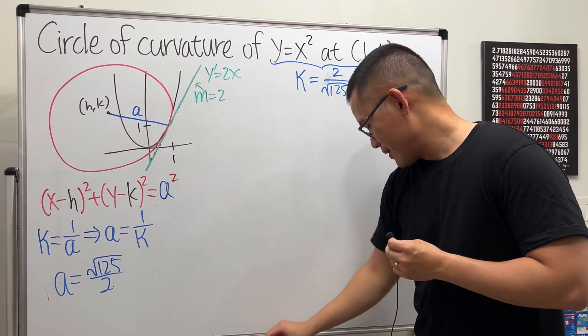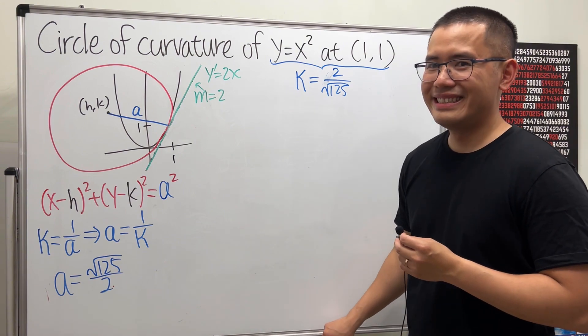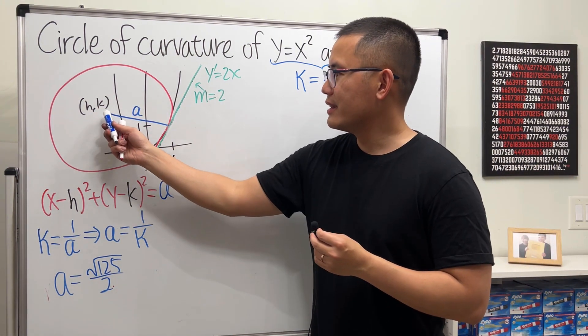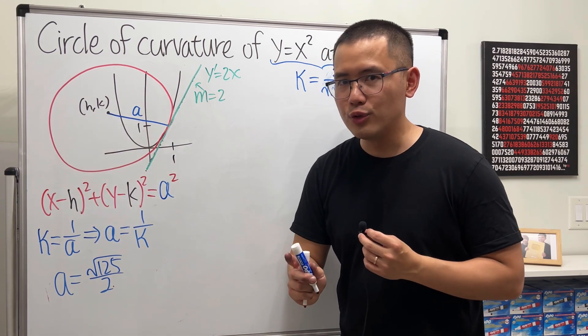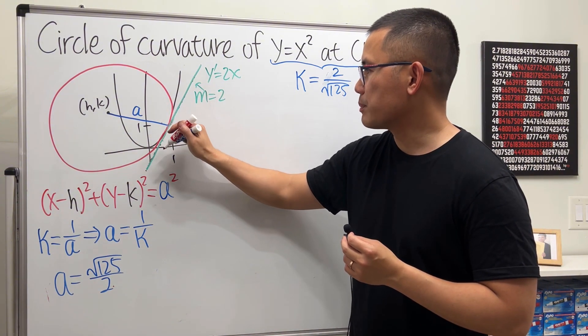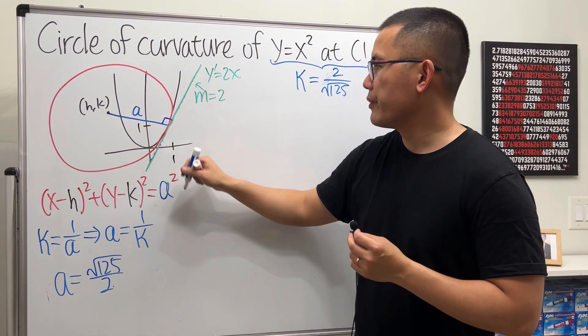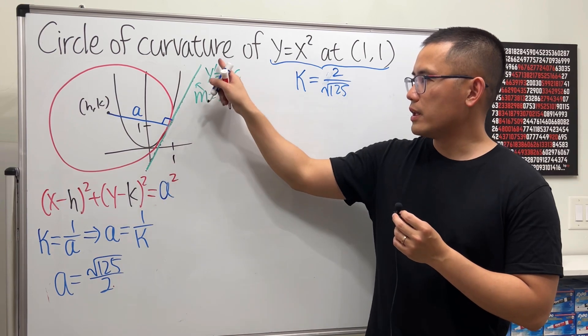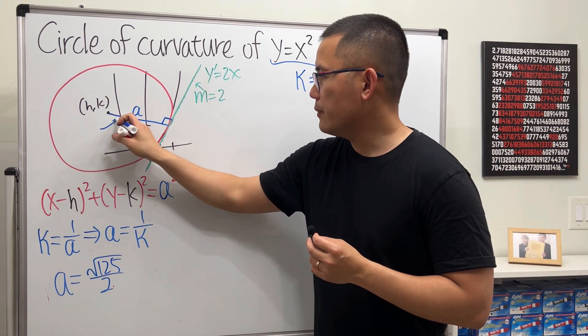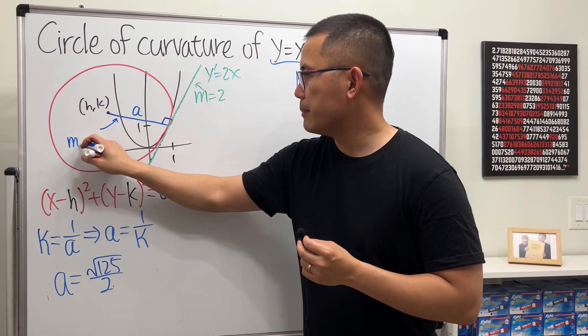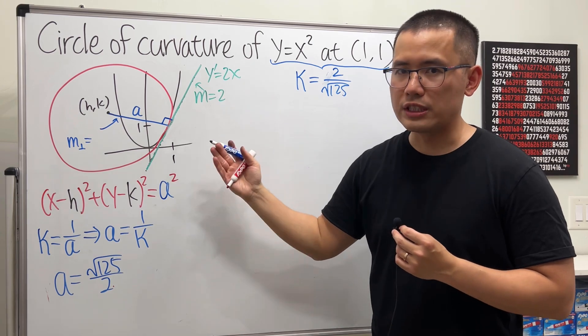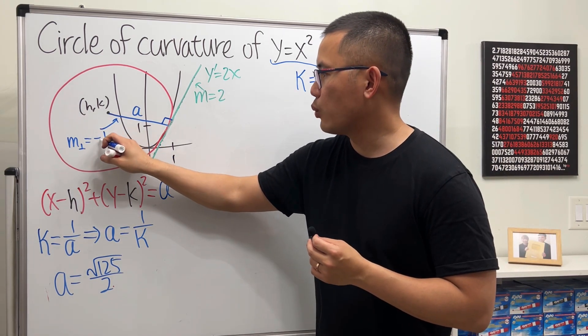Now, can we do some geometry? Yes. Whenever we have a circle, the radius is always going to be perpendicular to the tangent line. So this right here is perpendicular. And we know the slope of the tangent line is 2. So the slope right here, I will call that m perpendicular. It's just the opposite sign and then reciprocal. So we get negative 1 over 2.